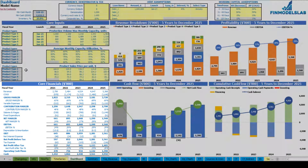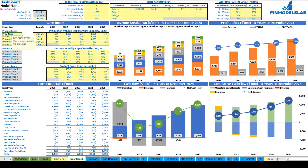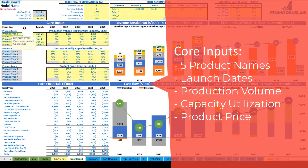Let's start from the core inputs. On the top left section you have up to five product types or groups. All these yellow cells are changeable, so you can set up product A, product B, or any other name you would like. The next step is to set up the launch date or start of production for each of these product types. You can use a dropdown and set any month within this five-year model.